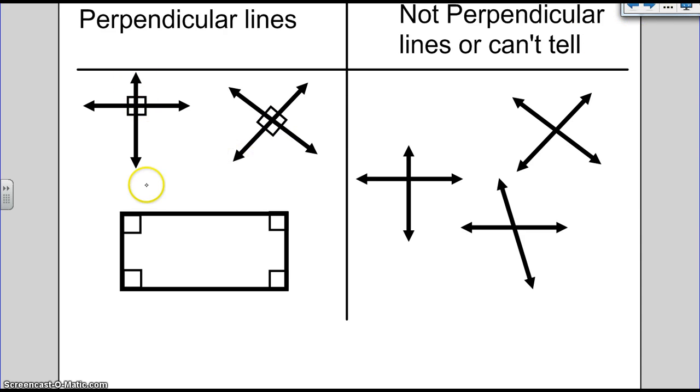Perpendicular lines are lines that cross at a what? What do you think these little boxes mean? That means 90 degrees. So they cross at a 90 degree angle. 90 degrees. This little box tells you that they cross at 90 degree angles. Over here I don't have that little box. That doesn't even look like a 90 degree angle and I don't have a little box which means you can't tell if these are perpendicular.